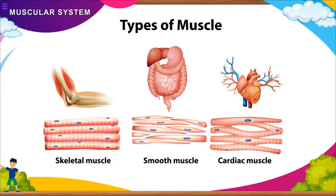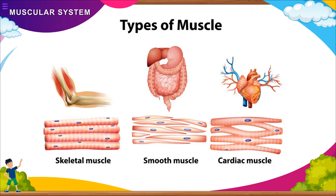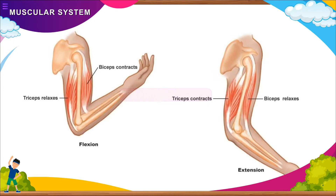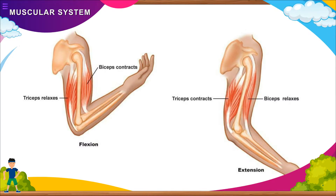Types of Muscles. There are three types of muscles: Skeletal Muscles, Smooth Muscles, and Cardiac Muscles. Most of the muscles in our body work when we want them to do so. These muscles are called skeletal muscles. These are also called voluntary muscles, as the movement depends on the person's will.